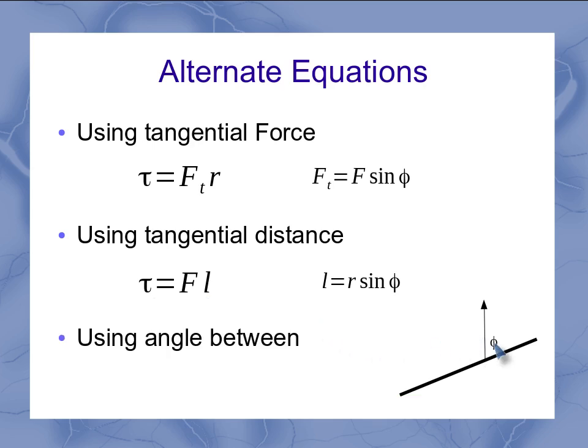Now, if I just look at the angle in between, what I'll see is that if I plugged in my lever arm as being r sine theta, or if I plugged in my tangential force as being F sine theta, then both of these equations reduce to that the torque is equal to the force times the distance between the pivot point where the force is applied, and the sine of the angle in between those two lines.